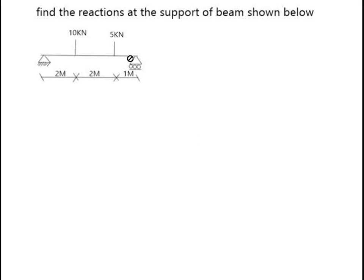The question reads, find the reactions at the support of beam shown below. You are going to represent the free body diagram of this beam as the first step. This is pin support and pin support has both vertical and horizontal reaction, whereas roller support has just vertical reaction. That is what you are going to represent.